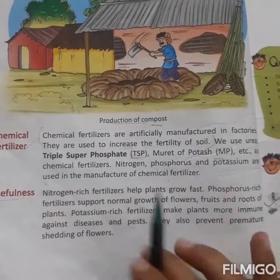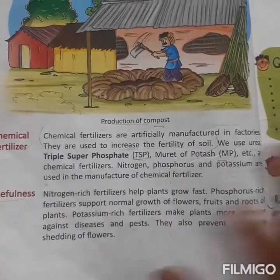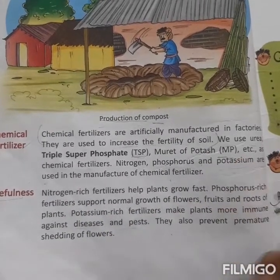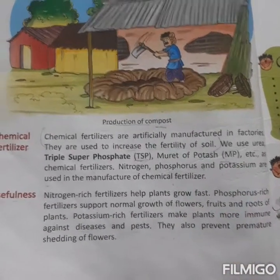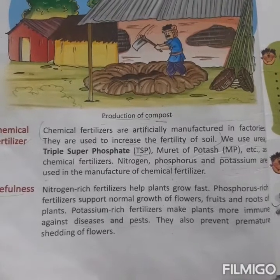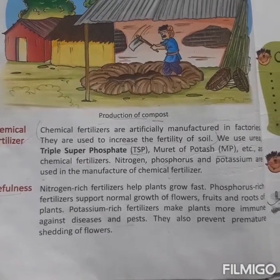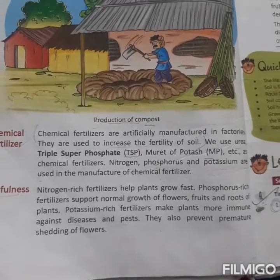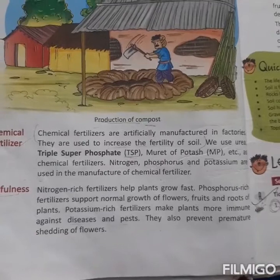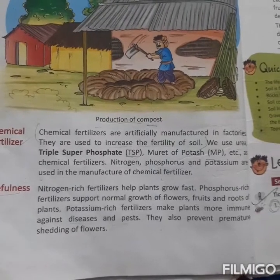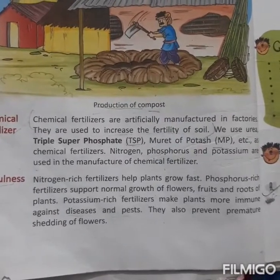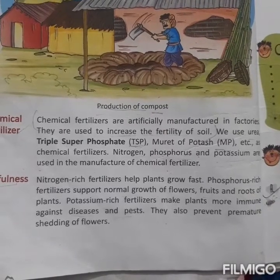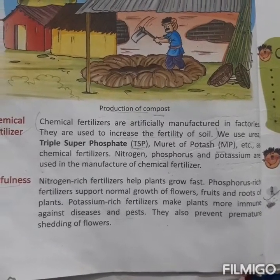Nitrogen, phosphorus, and potassium are three types of fertilizers. Phosphorus supports fruit and root growth. Potassium-rich fertilizer makes plants more immune against disease.